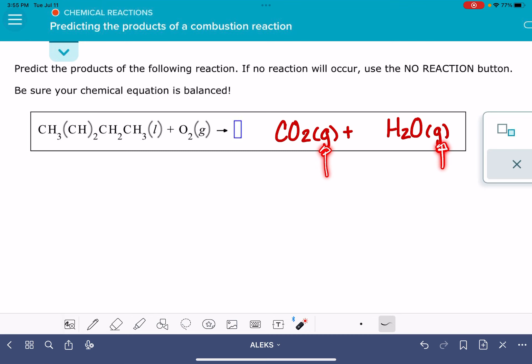Yes, Aleks does want you to include these states. That's part of the answer. So all you really have to do is balance this equation, and sometimes these equations can be a little bit tricky to balance. I'm going to start by counting up how many carbons, hydrogens, and oxygens I have on each side of the arrow originally.